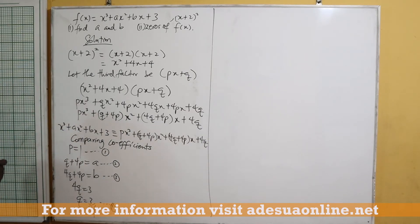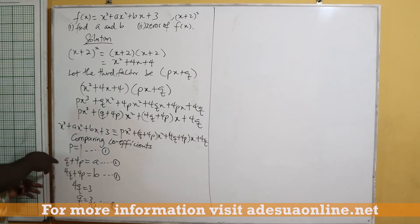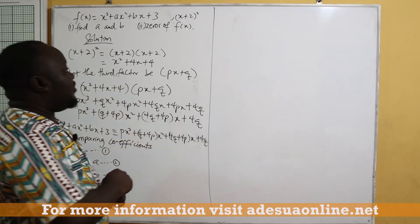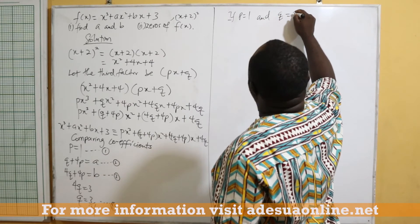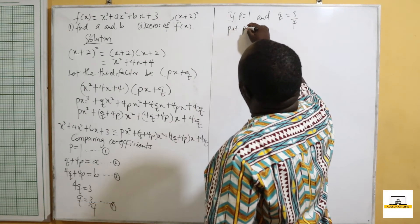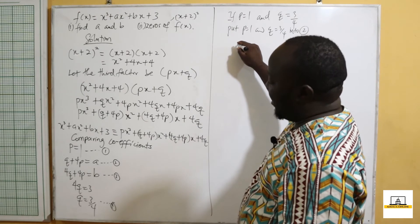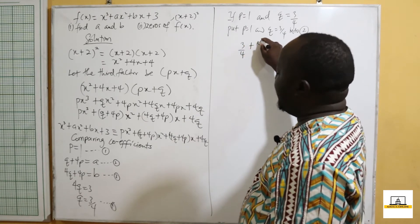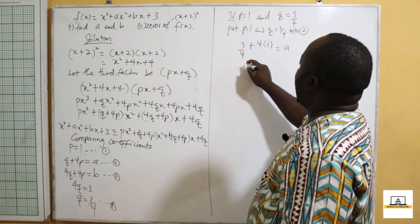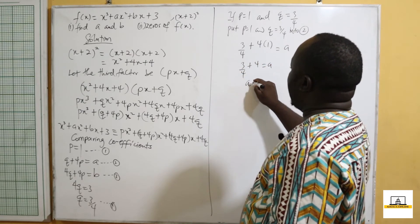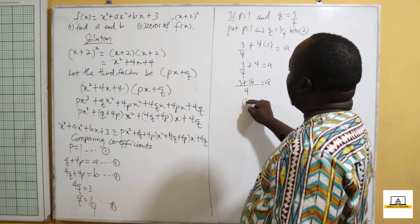Now, if we need to find a and b, let's substitute p equals 1 and q equals 3 over 4 into equation 2. From equation 2: q plus 4p equals a, so 3 over 4 plus 4 times 1 equals a. Finding the LCM of 4: we have 3 plus 16 over 4, so a is equal to 19 over 4.